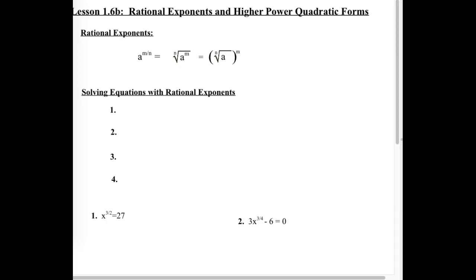We can do it in either order — we can raise a to the nth power and then take the nth root, or we can take the nth root first and then raise it to a power. I typically take the root first because it makes the number get smaller, and then I can take that smaller number to a power. If I use the power first, I'm making my number get big and then I have to try to find a root of it — it's just a little harder.